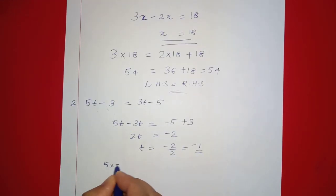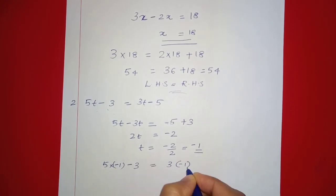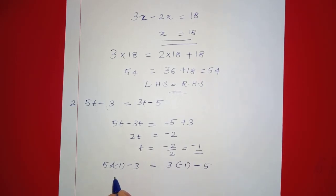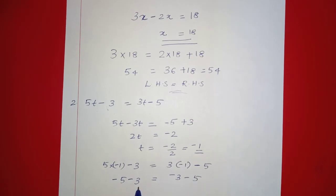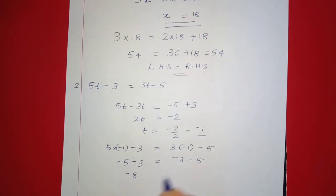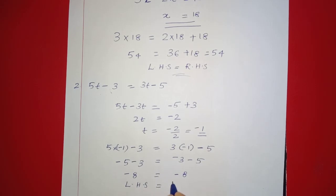We check by substituting t equals minus 1: 5 into minus 1 minus 3 equals 3 into minus 1 minus 5. That gives minus 5 minus 3 equals minus 3 minus 5, so minus 8 equals minus 8. LHS is equal to RHS.